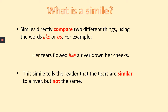Let's read an example: 'Her tears flowed like a river down her cheeks.' We know this is a simile because it uses the word 'like.' This simile tells the readers that tears are similar to a river, but not the same.